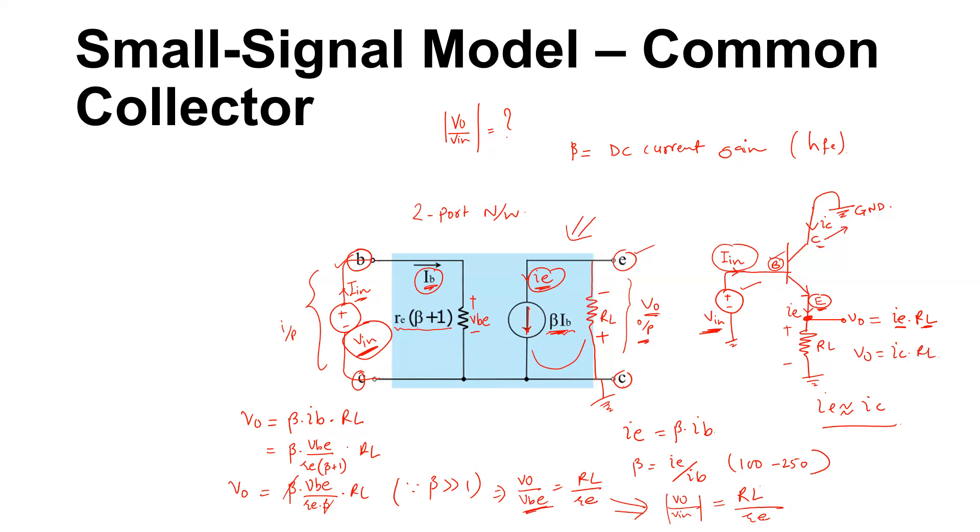Is that correct? So you have a voltage gain for the common emitter configuration.